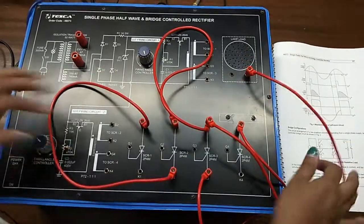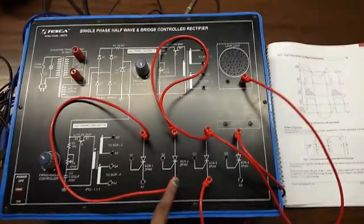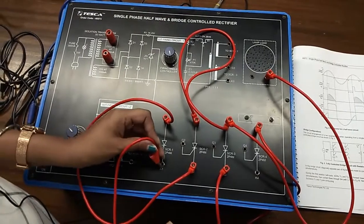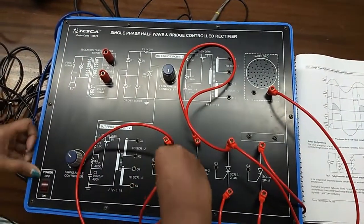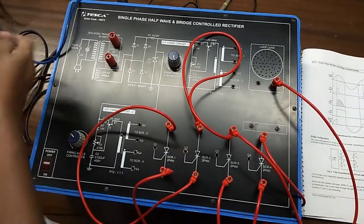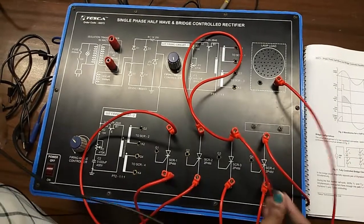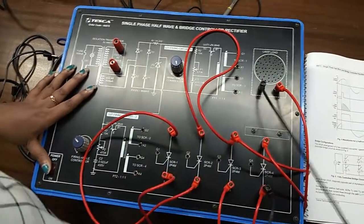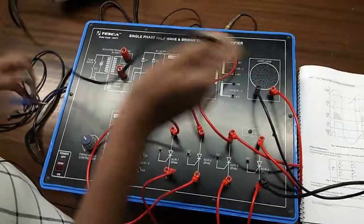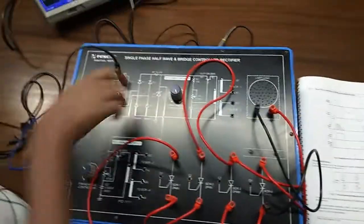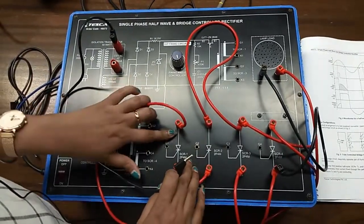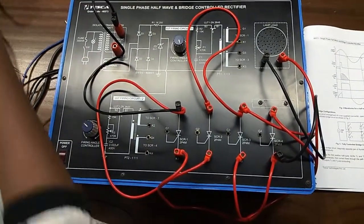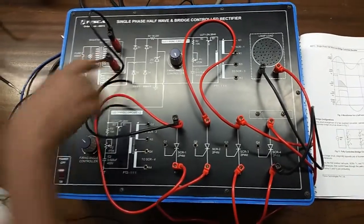Also short these two cathodes K1 and K4 and connect this here at the lamp load, this is the positive terminal of lamp load. Now, connect the power supply from here at A1 and connect this at A4.